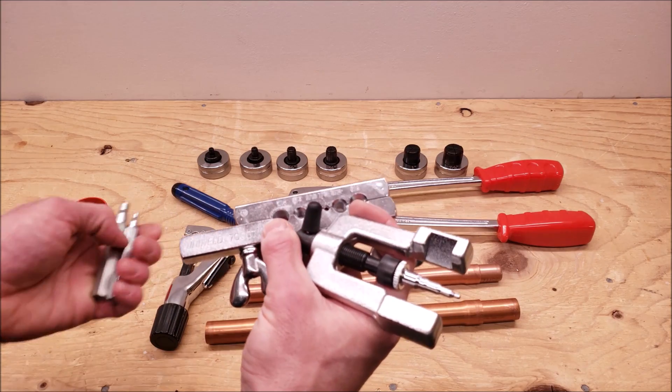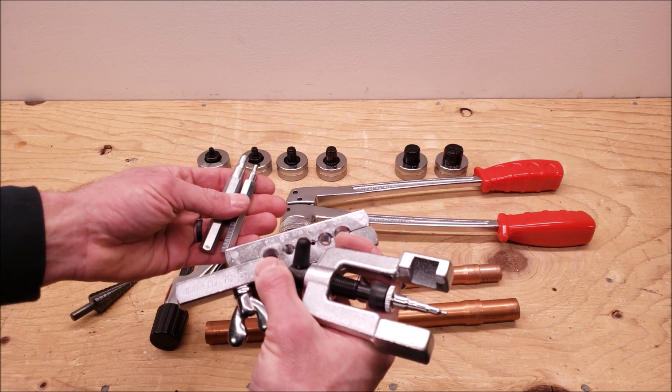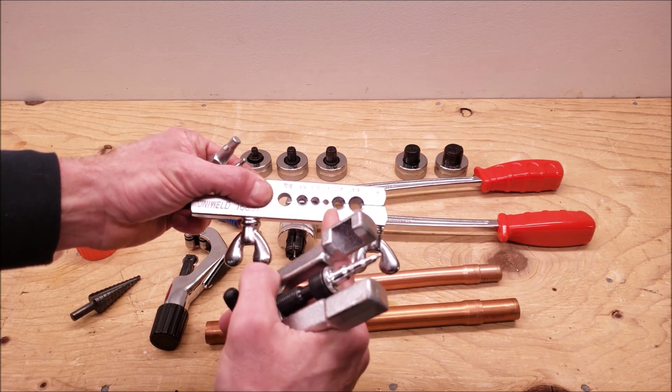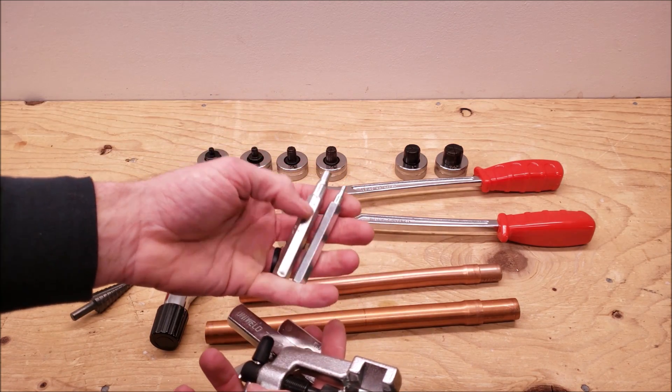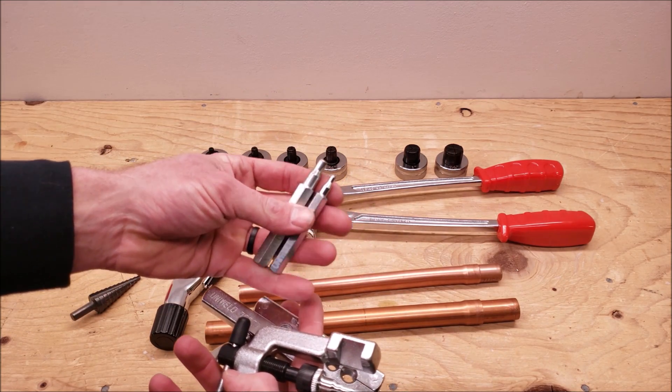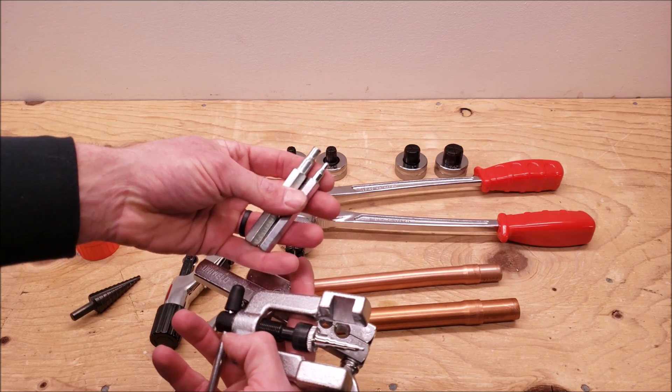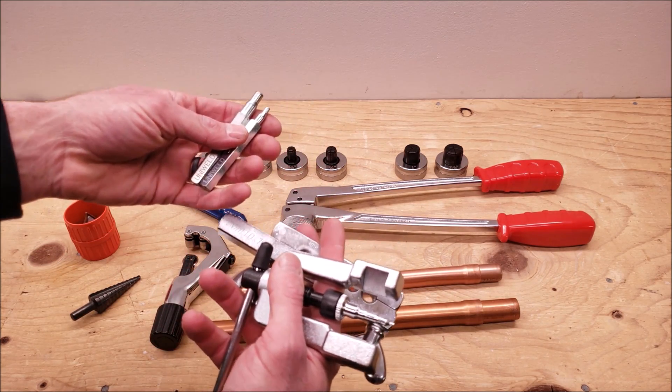So you know for sizes that are 3/8", 5/16", 1-1/4", I typically use a swage block with a swager such as this or with hammer swages. What it does is it just leaves a very nice swage all the way around for those smaller tubes.